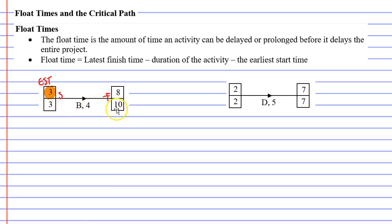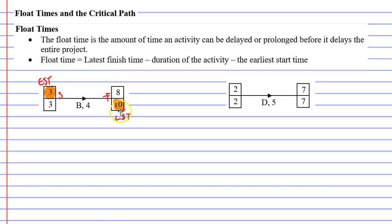Let's now look at the vertex on the right. It also has two numbers, but we're only interested in the number at the bottom, because that represents the latest start time of the next activity. The next activity cannot start any later than 10 hours into the project, which means activity B has to be completed before 10 hours is up. If we go beyond 10 hours, we're going to delay the next activity.